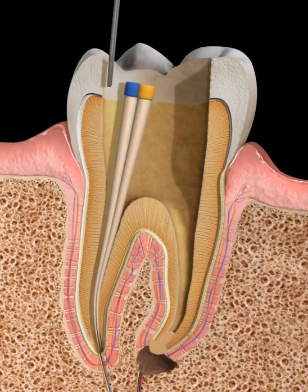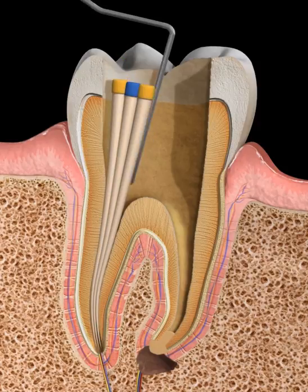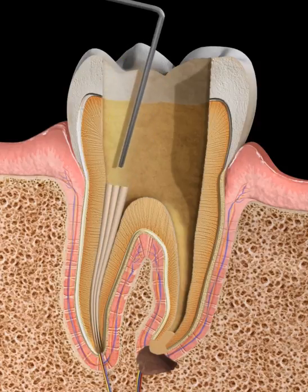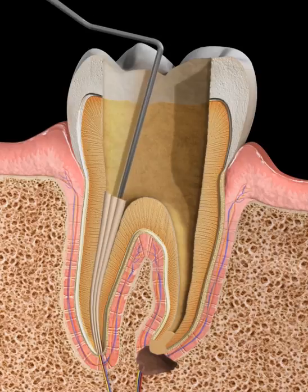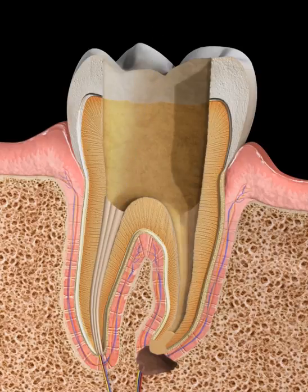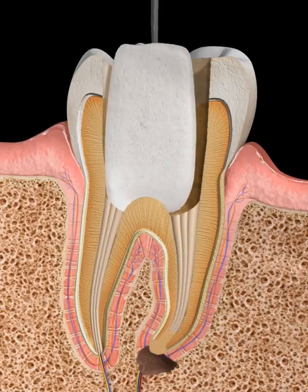It is inserted, impacted, and cut to the desired shape. The remainder of the tooth is restored temporarily with a composite material, which is set using a dental curing light.